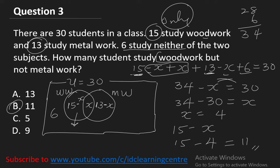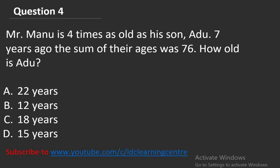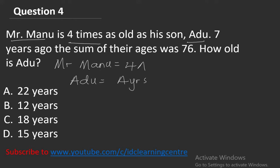Question number 4: Mr. Manu is four times as old as his son Adu. Seven years ago, the sum of their ages was 76. How old is Adu? We use algebra. We don't know the age of either. Since Mr. Manu is four times as old as his son, let Adu's age be A. Then Mr. Manu's age is 4A.